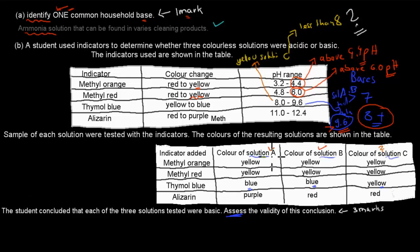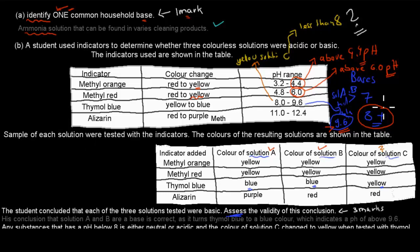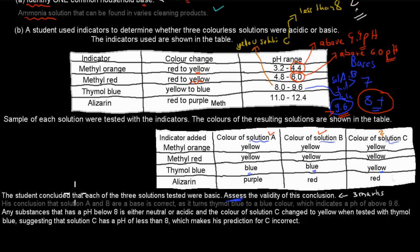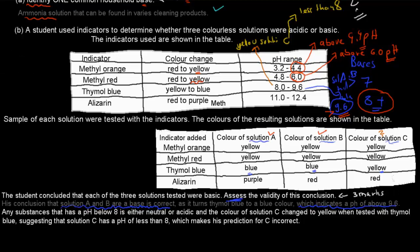For your written answer, you should address each solution — A, B, and C — and explain why each conclusion is correct or incorrect. For solutions A and B, I wrote: the student's conclusion that solutions A and B are bases is correct. Using thymol blue, they turned blue, which indicates a pH above 9.6, and that is basic.